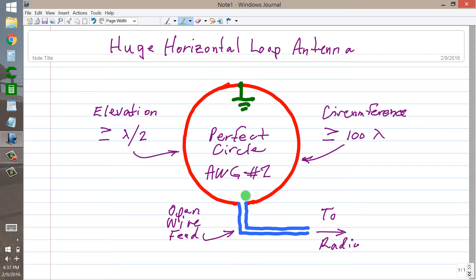So you get a radiation pattern similar to that of a vertical dipole, except for one very significant difference. You're going to get diversity of reception because of the enormous size of this loop.